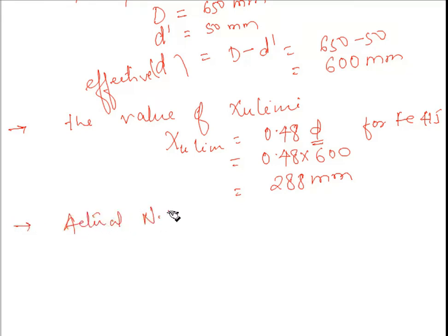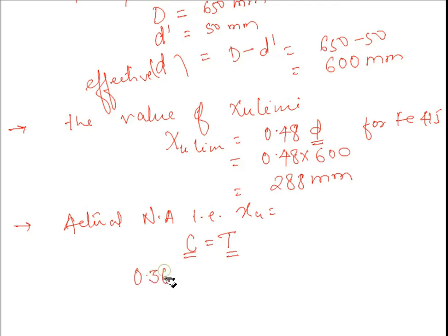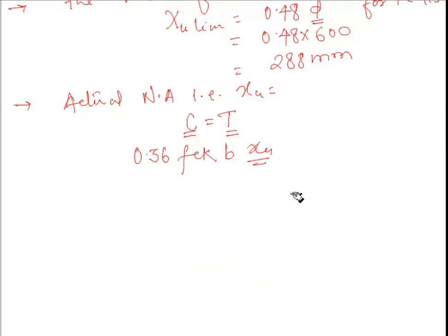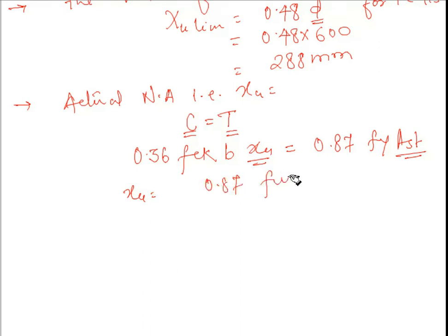Now we calculate the actual neutral axis depth Xu. The condition is that compression equals tension. For compression: 0.36 × fck × b × Xu. For tension: 0.87 × fy × Ast. Equating these, Xu = (0.87 × fy × Ast) / (0.36 × fck × b).